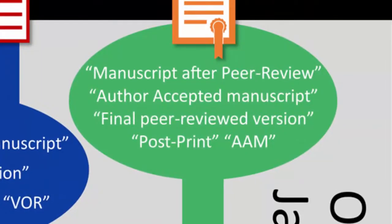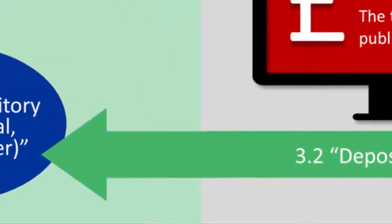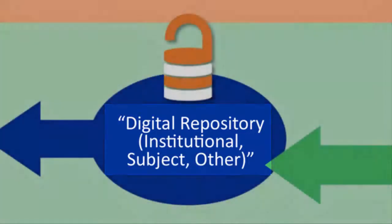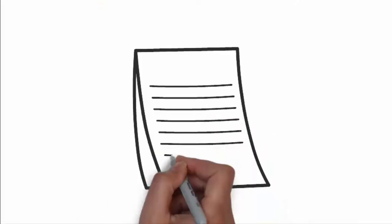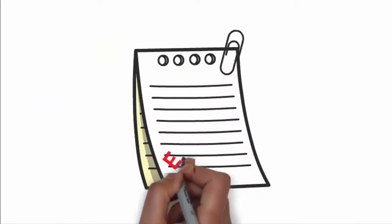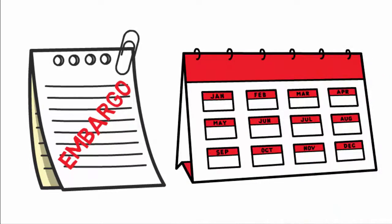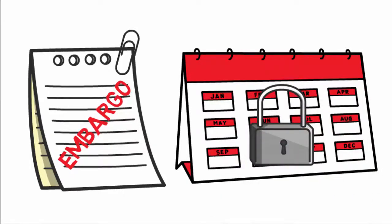The final route available when publishing open access takes us back to the author accepted manuscript mentioned earlier. This version of your research paper can be deposited in a digital repository — either an institutional repository like the Essex Research Repository, or a subject-based or central repository like PubMed or arXiv. Depositing your work in this way is known as green open access. In many cases, research published by the green route has to be under embargo for a certain period, usually ranging from three to twelve months, allowing the publisher to retain a monopoly on the article.